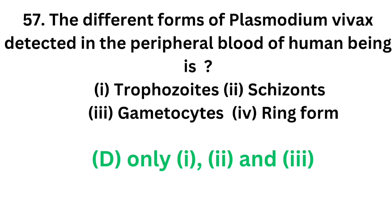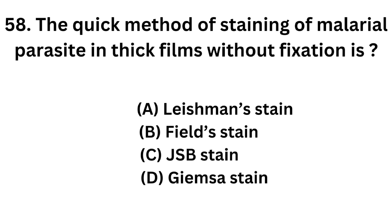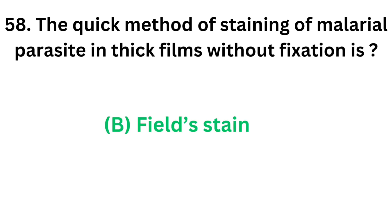Ring forms are present only in falciparum. Question number 58. The quick method of staining of malarial parasite in thick films without fixation is: Option A: Leishman stain. Option B: Field stain. Option C: JSB stain. Option D: Jamieson stain. The correct answer is Option B, Field stain. Field stain is the quick method used to stain malarial parasites in thick films without fixation.